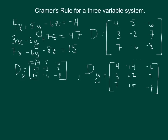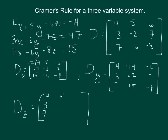The last matrix we need is our D sub z matrix. All of the z values in our coefficient matrix are replaced with what the equation equals — negative 14, 47, and 15. So we get four, three, seven as our first column, five, negative two, negative six in the second column, just like the coefficient matrix, and then negative 14, 47, and 15. That covers all of the matrices we need to start with Cramer's Rule.